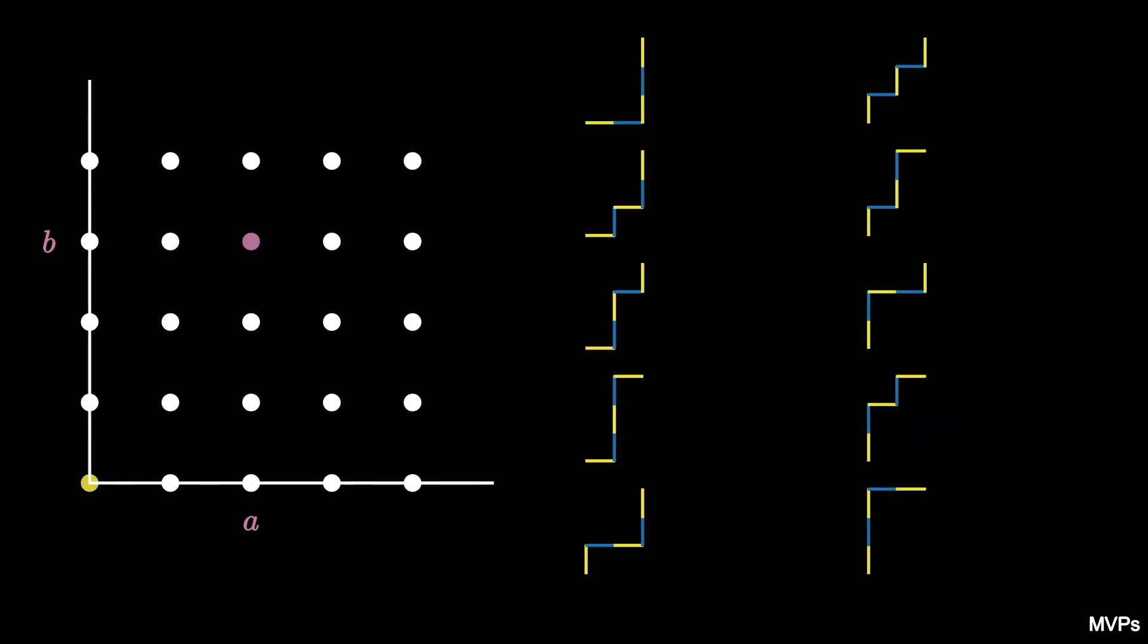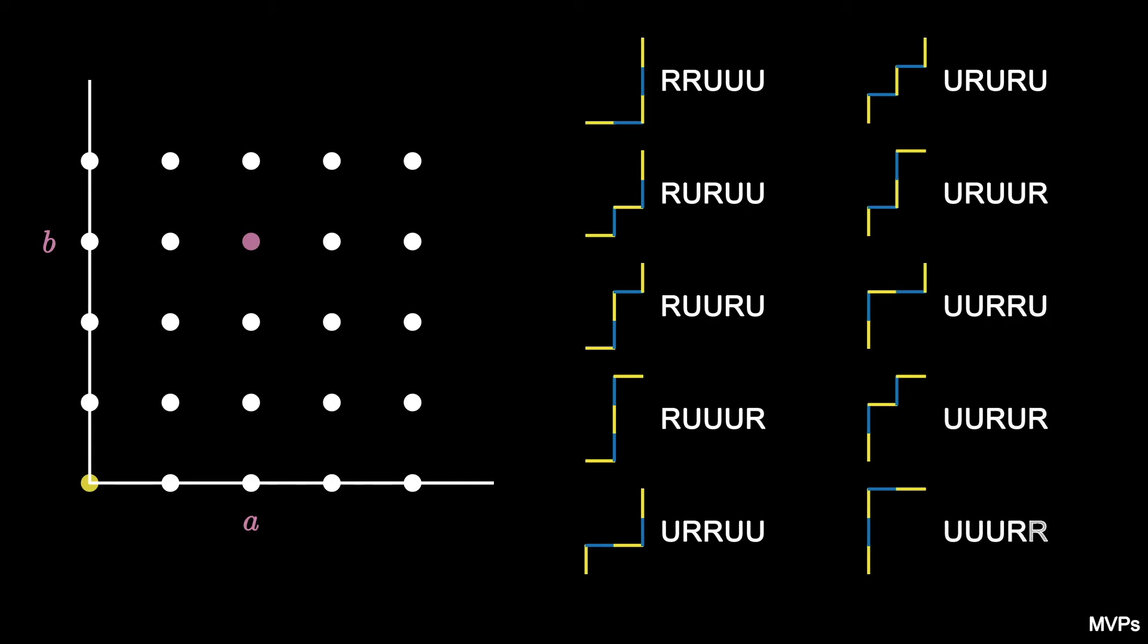We can keep track of these steps by listing off the order of the steps. For instance, the first path is RRUUU because the right steps happen first, and the last path is UUURR because the two right steps happen at the end.